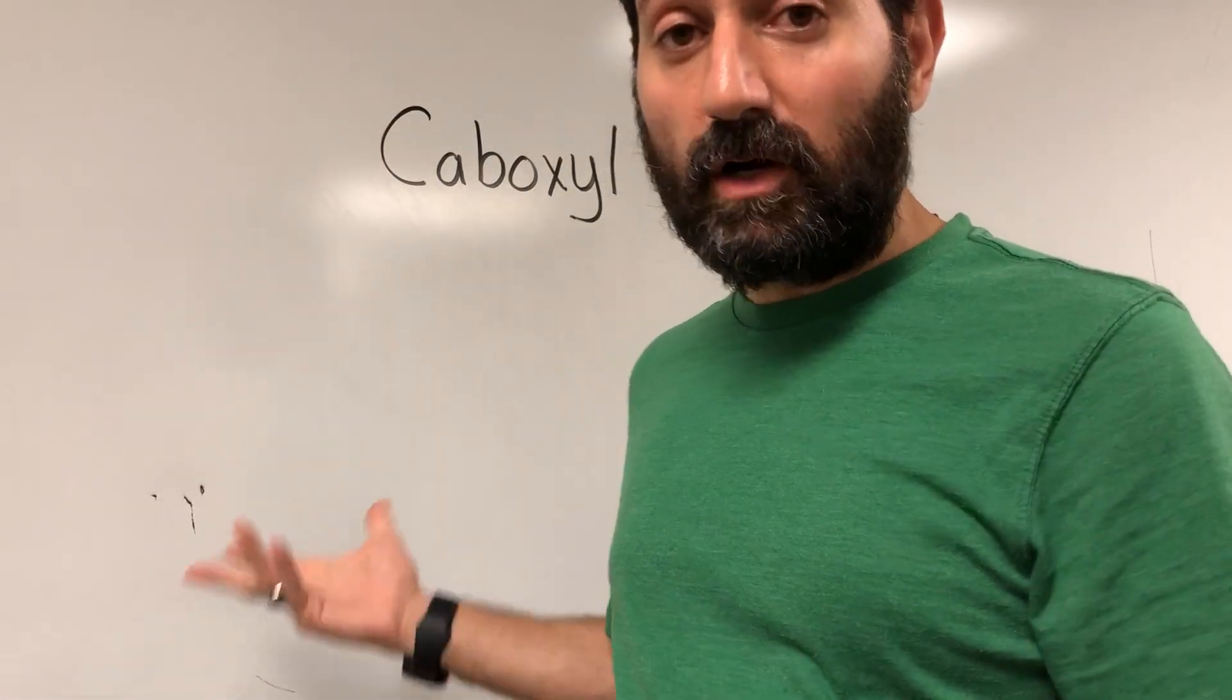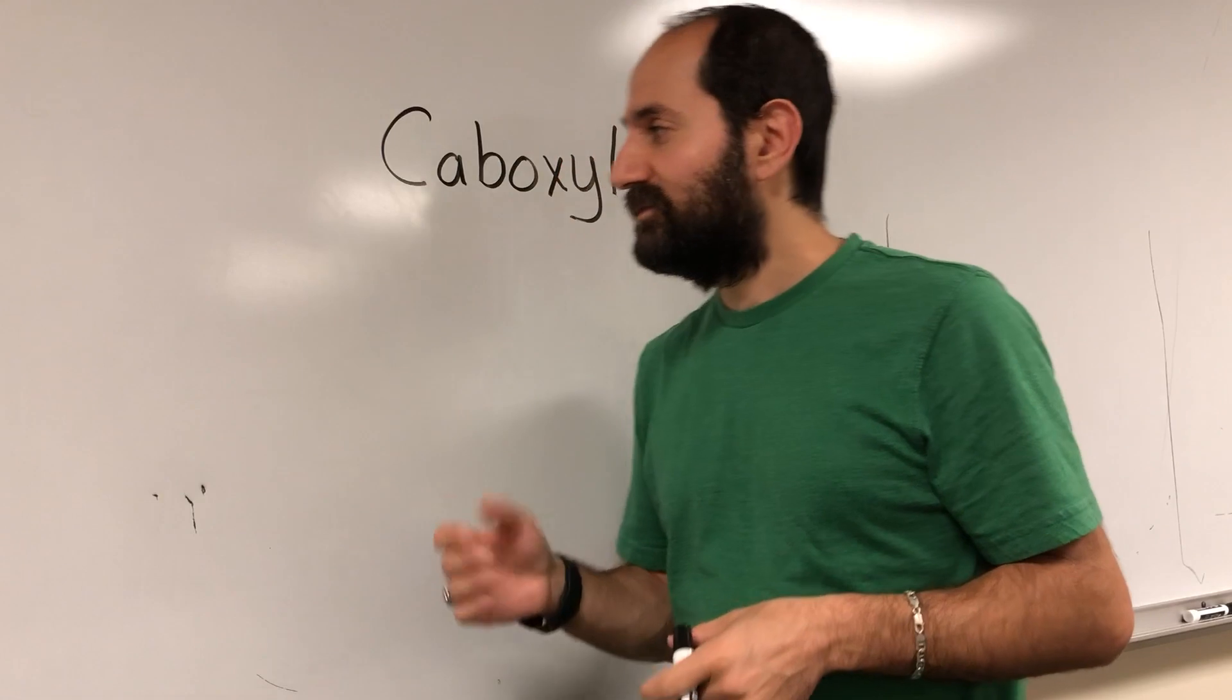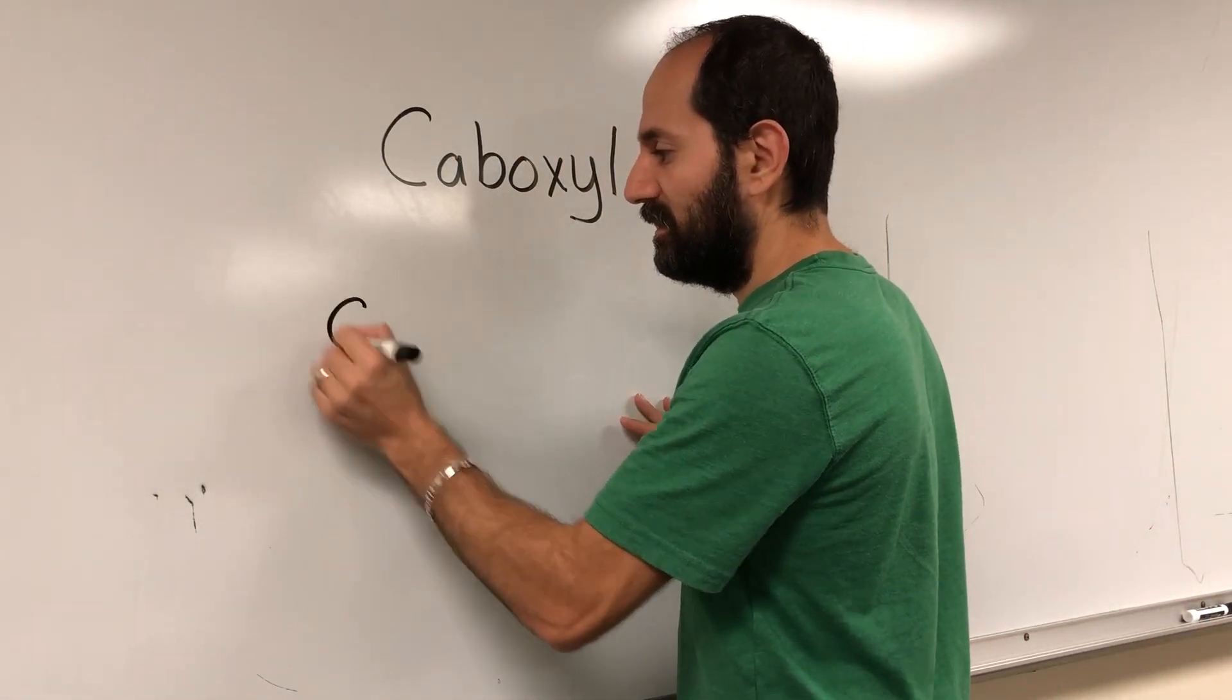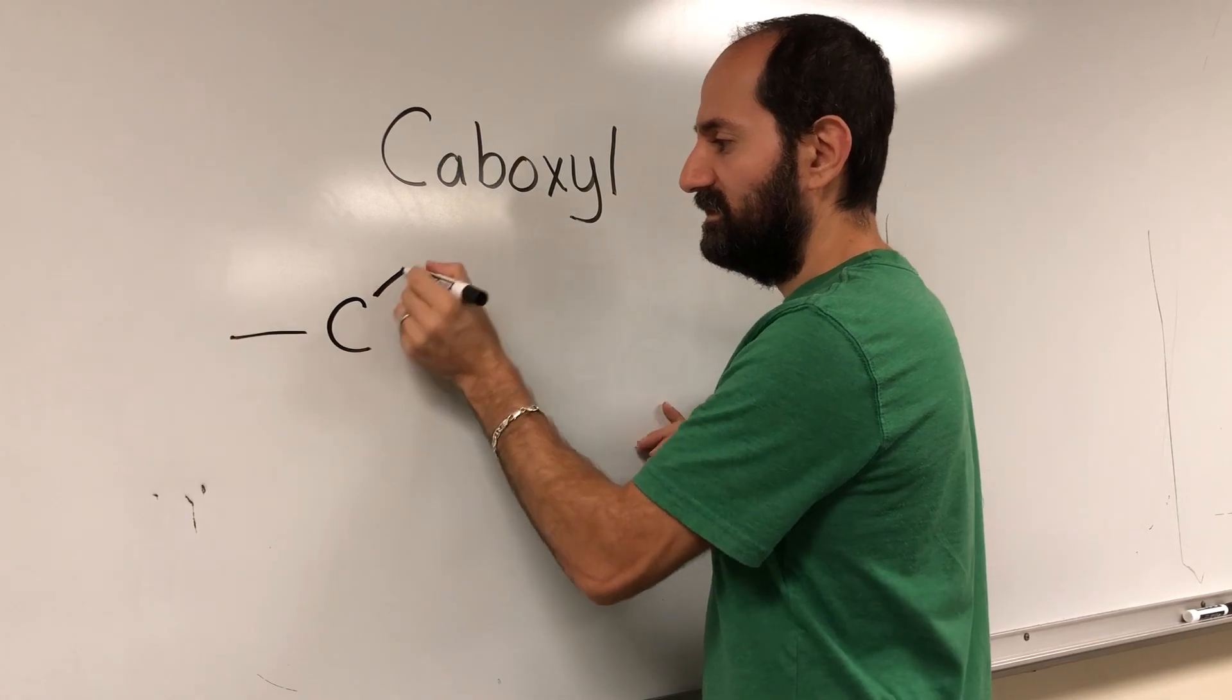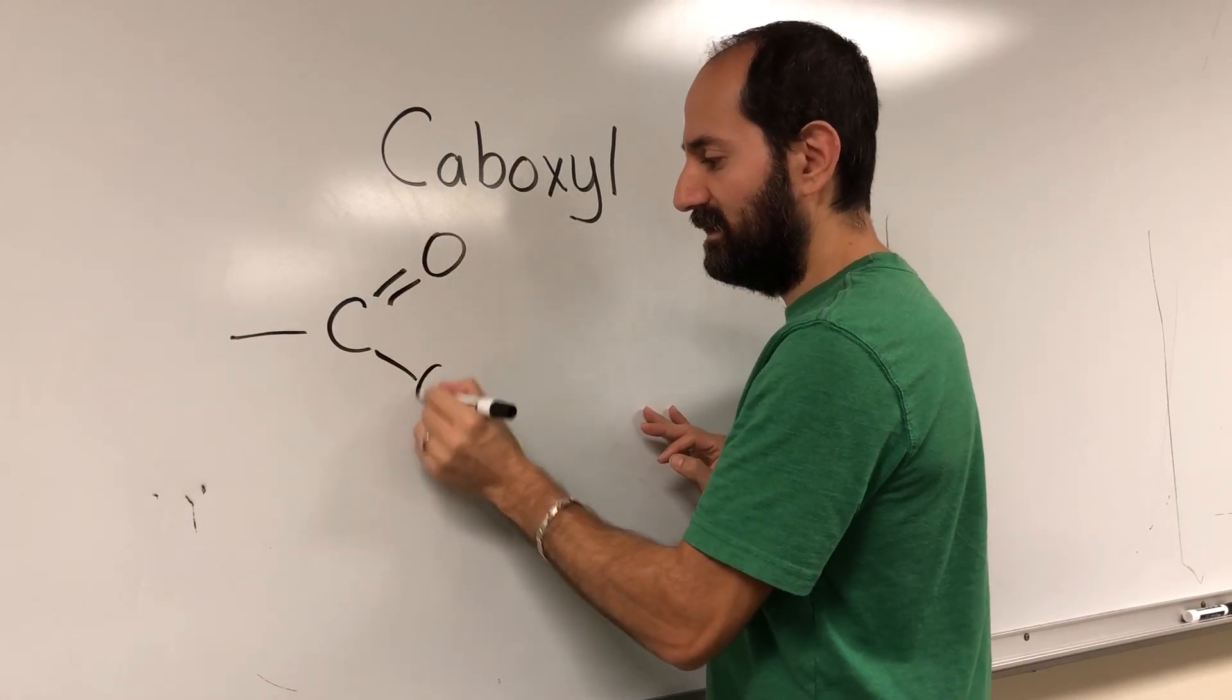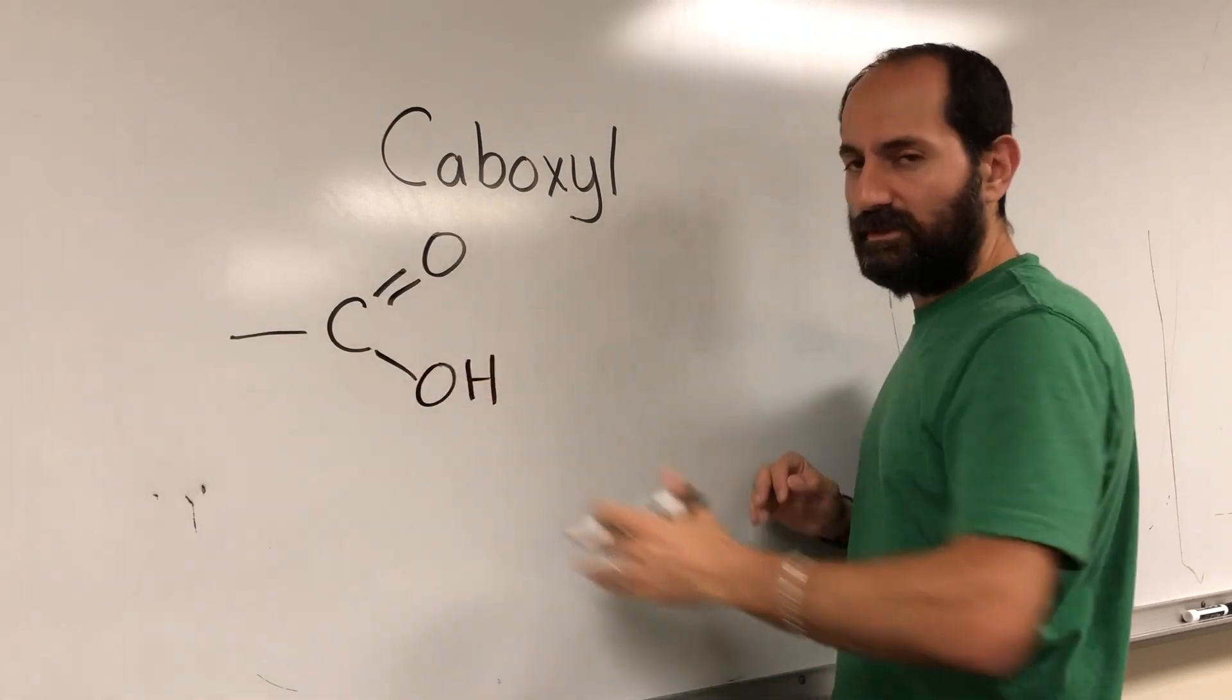Hey everyone, today I'm going to explain the carboxyl group. This is a functional group and it looks like this: you've got carbon with an oxygen double bond to oxygen and a hydroxyl. This may look familiar.